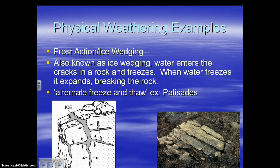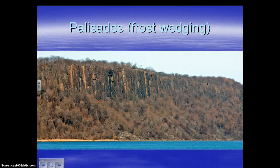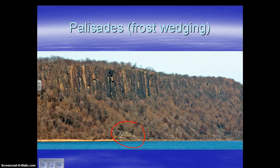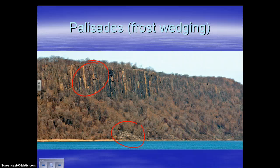At the bottom of the Palisades there's a big pile of what we call talus — basically a bunch of broken-off rocks that have come off a cliff and are now sitting at its base. You can also see a lot of red or rusting in the rock. We call that oxidation. That's a chemical form of weathering, but we'll come back to that later.